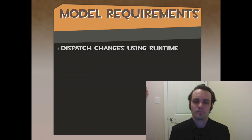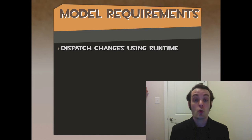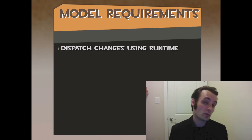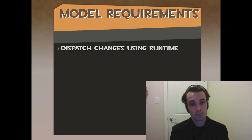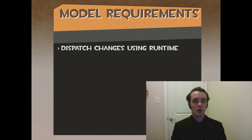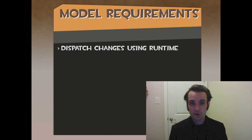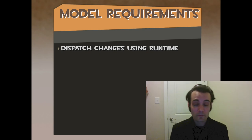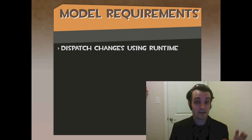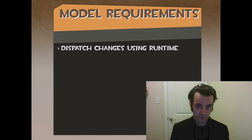The requirements for a model in RobotLegs for Corona SDK: all you have to do is dispatch changes using runtime. Runtime is the global event bus built into Corona. That's all you have to do for models. You can code them however you want, do the classes however you want. You don't have to map them in contexts. If you want, you can put them on global. As far as we're concerned with RobotLegs and the convention in Corona, this is all you have to do.